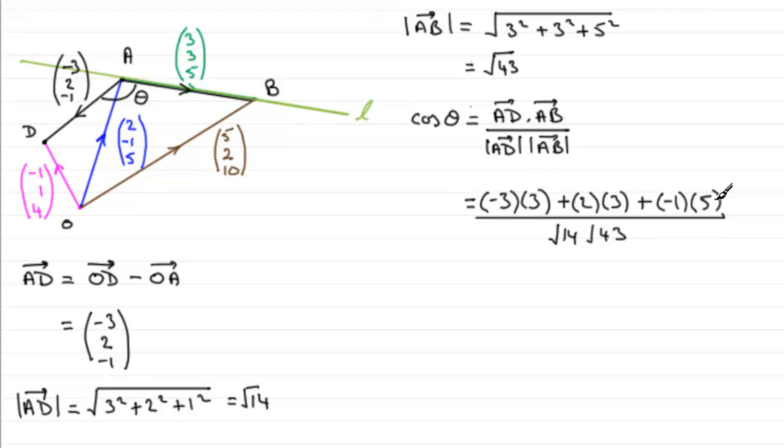Now if you work this out on the top, you've got minus 9 plus 6 minus 5 and that comes to minus 8. So we've got minus 8, all divided by the square root of 14 and 43. You could even put root of 14 times 43, that's up to you. You'll get exactly the same answer.